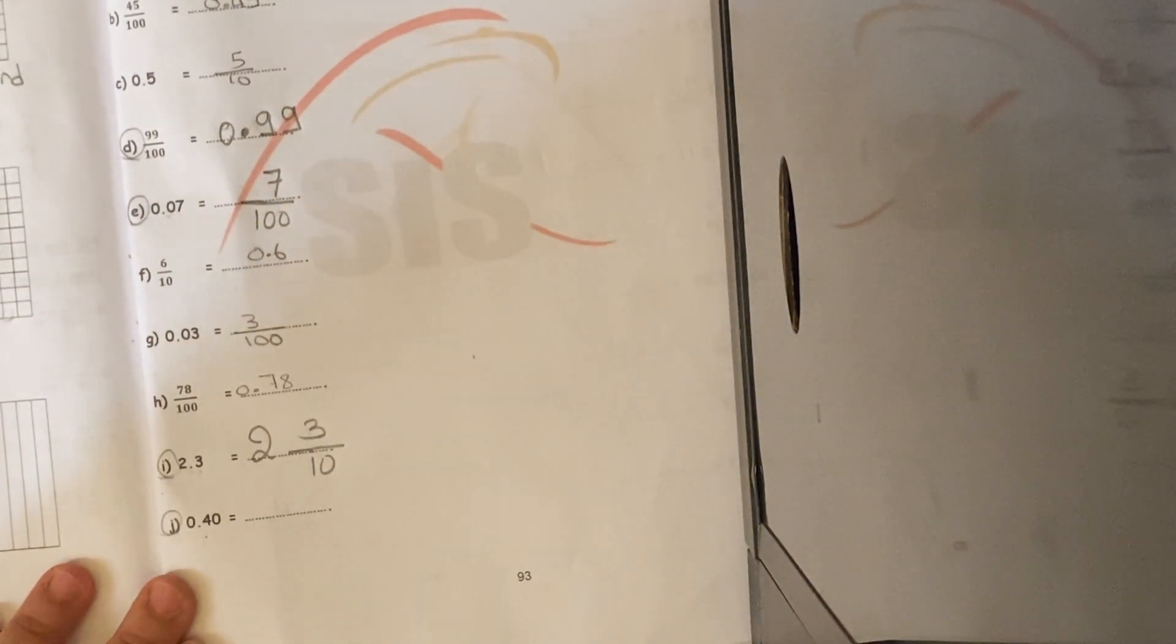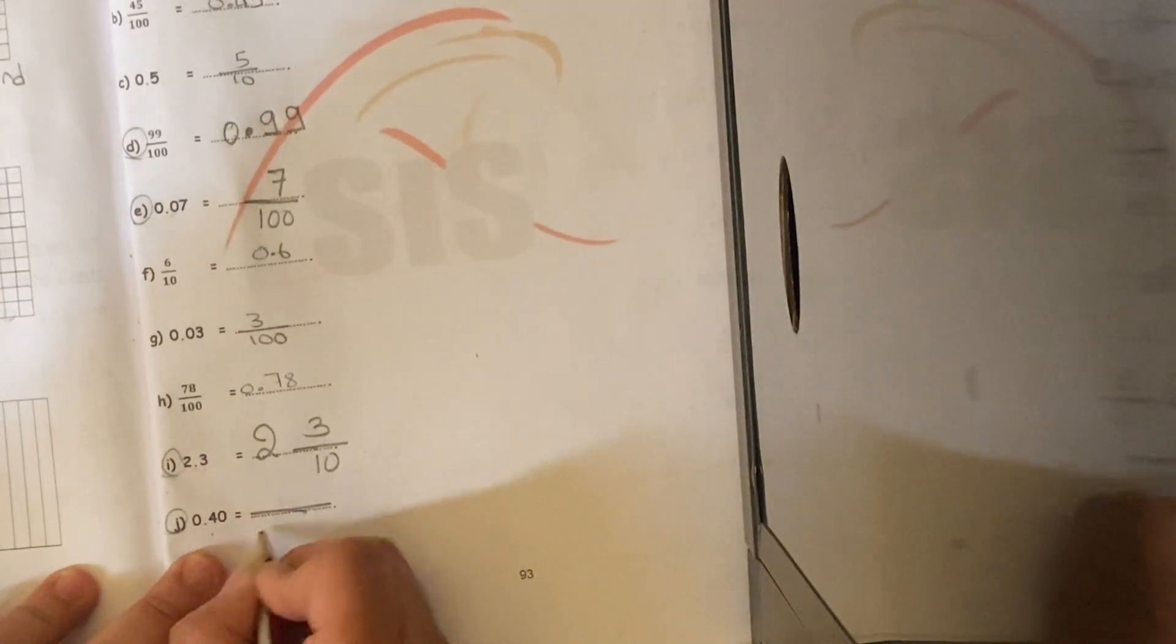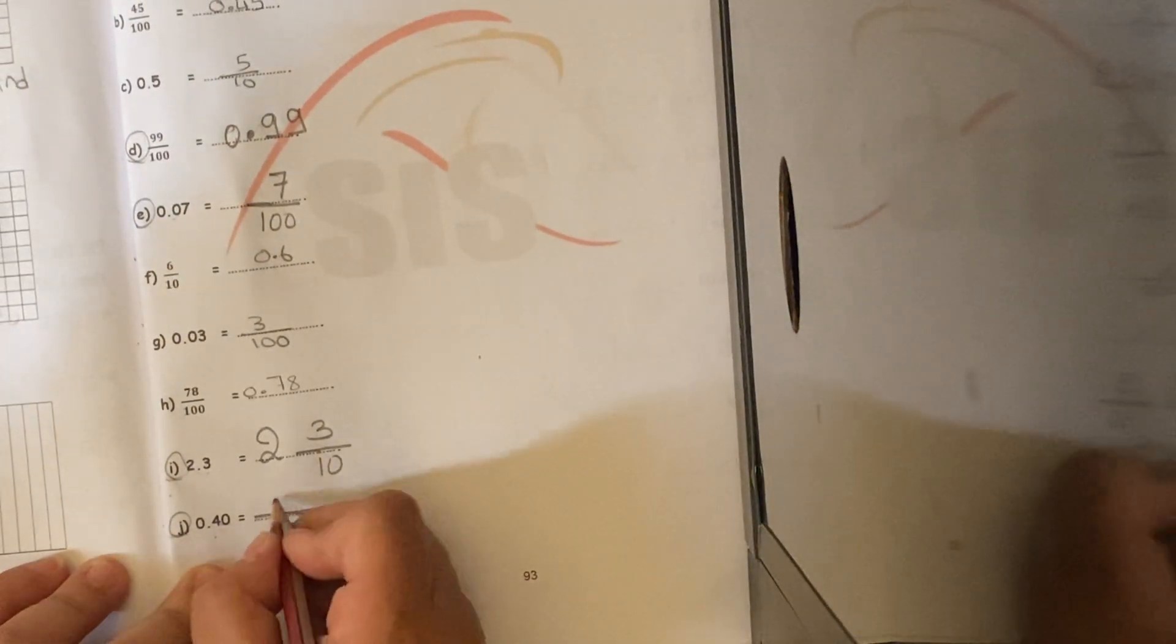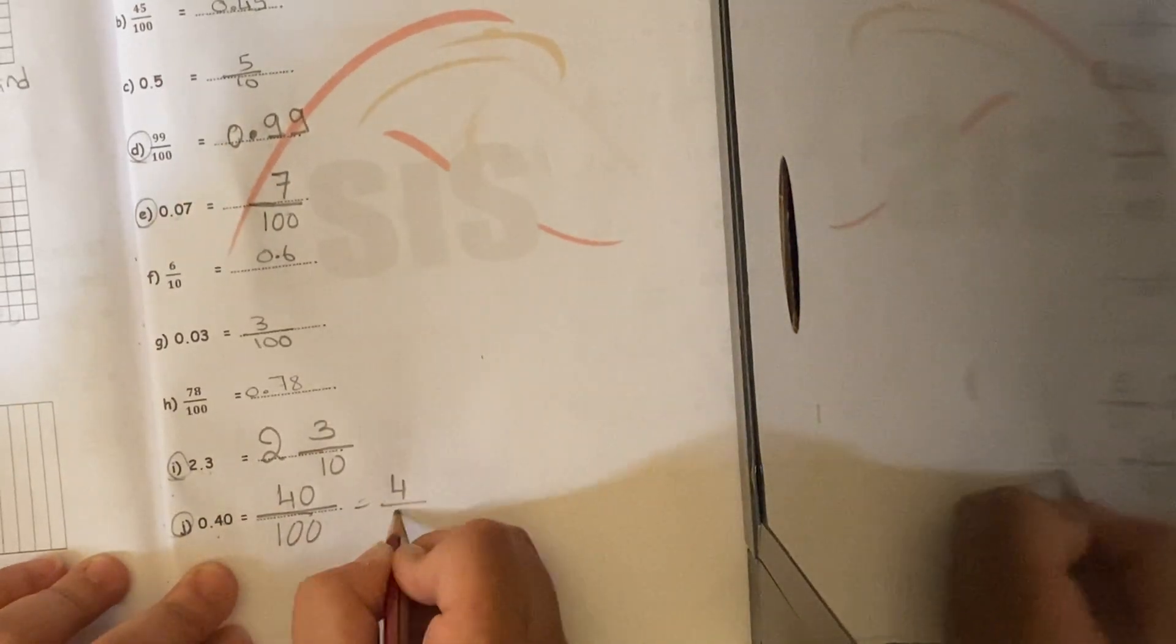The last one, 0.40. I don't have any whole number. All I'm going to put is the denominator, 100, because I have 2 chairs after the decimal point, and then I'm going to put 40, which is equal 4 over 10.